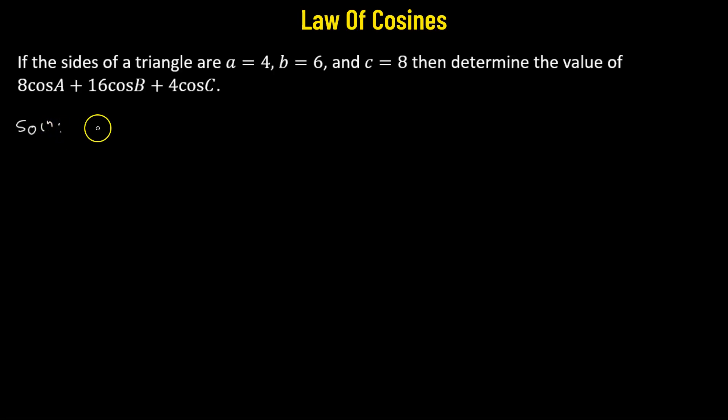Now, since we are given the value of the length of side a, here the a value is 4, b value is 6, and c value is 8, we can use the law of cosines to find out the value of cosine A, cosine B, and cosine C.